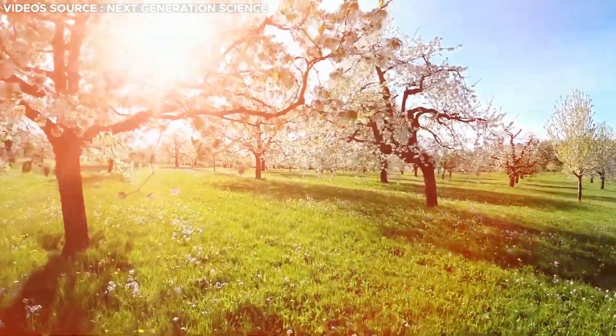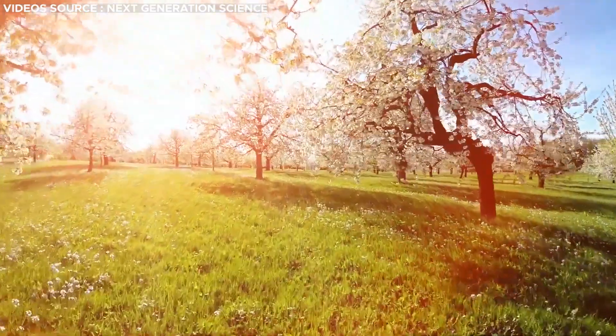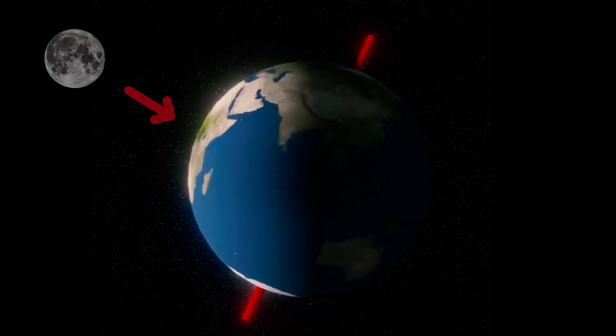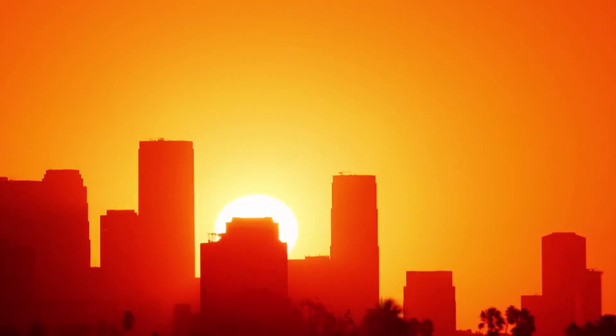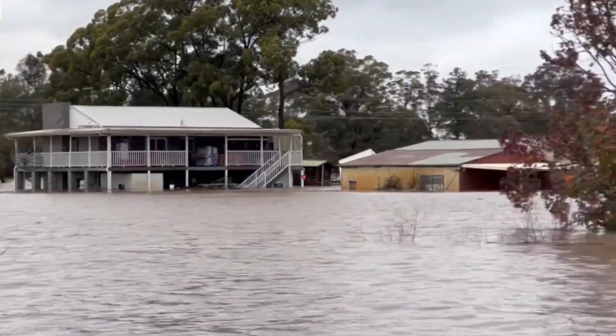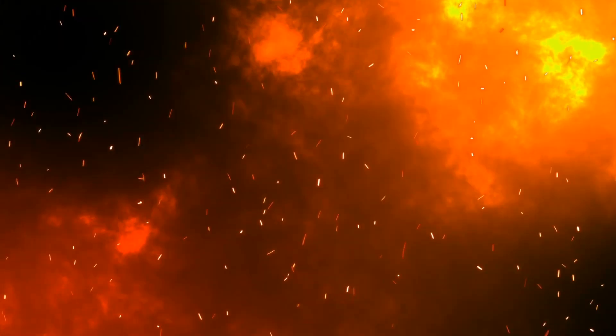The Earth's axial tilt is instrumental in the seasonal variations experienced, regulating the distribution of sunlight across the planet. In the absence of the moon's stabilizing influence, the Earth's axial tilt might become more erratic, potentially giving rise to drastic climate fluctuations and even posing a threat to biodiversity through possible mass extinctions.